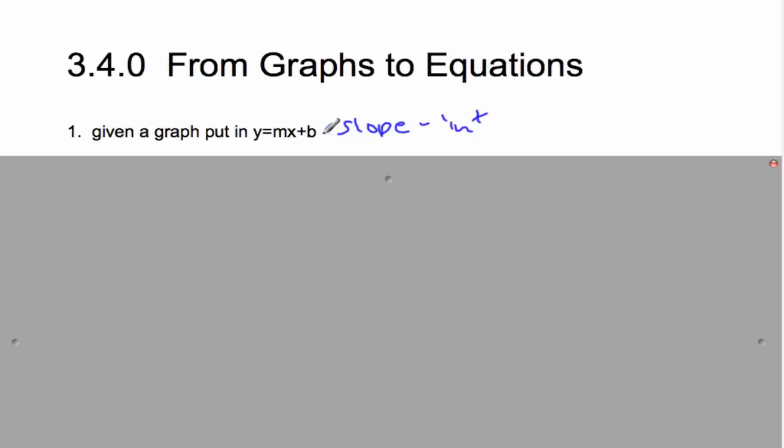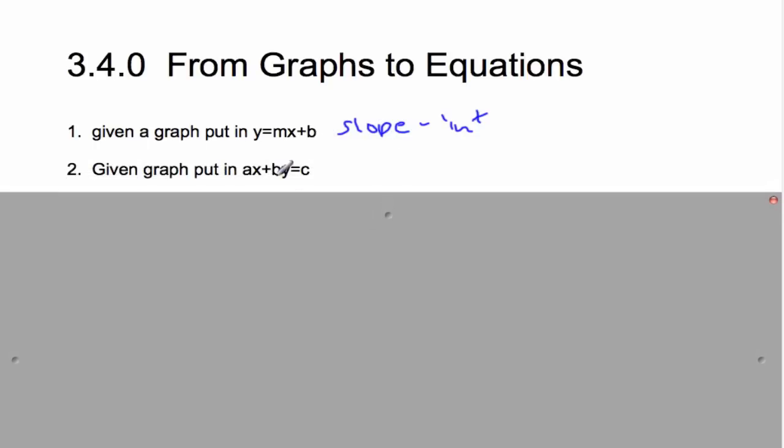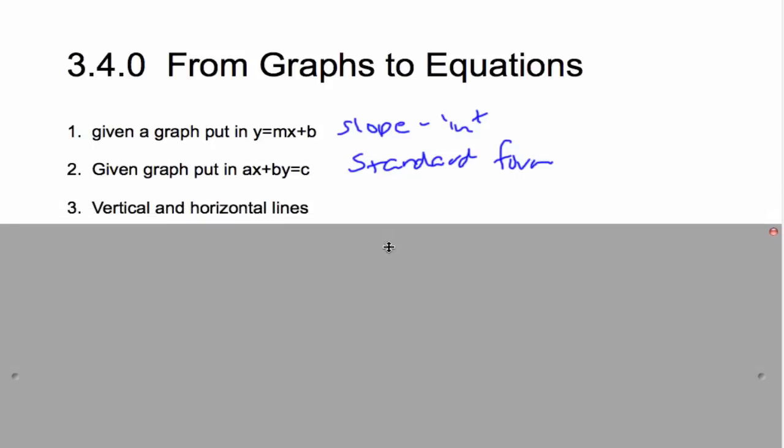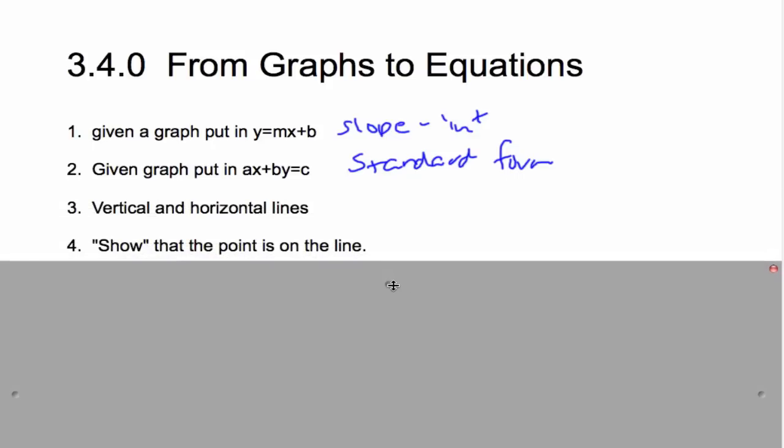Because m is the slope and b is the intercept. Then, we'll put it into ax plus by equals c, which is our standard form. With standard form, a, b, and c should all be integers. There shouldn't be any fractions. Then we'll do vertical and horizontal lines, and lastly, we'll talk about what it means to show that a point is on the line.